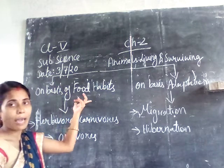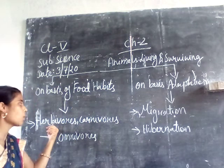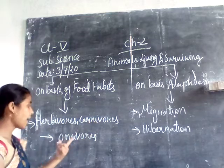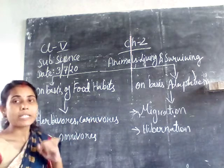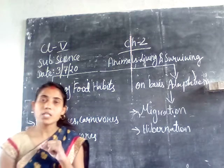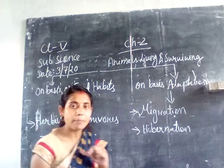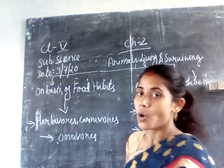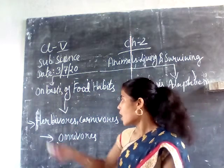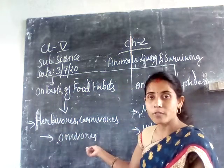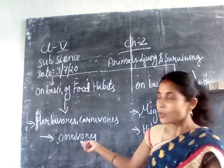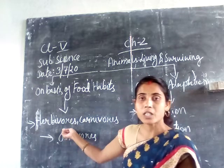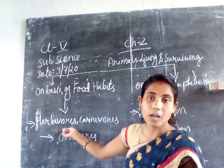On the basis of food habits, animals have been classified into how many categories? They are classified into 3 categories: herbivorous, carnivorous, and omnivorous. So on the basis of food habits, animals have been classified into these 3 categories: herbivorous, carnivorous, and omnivorous animals.